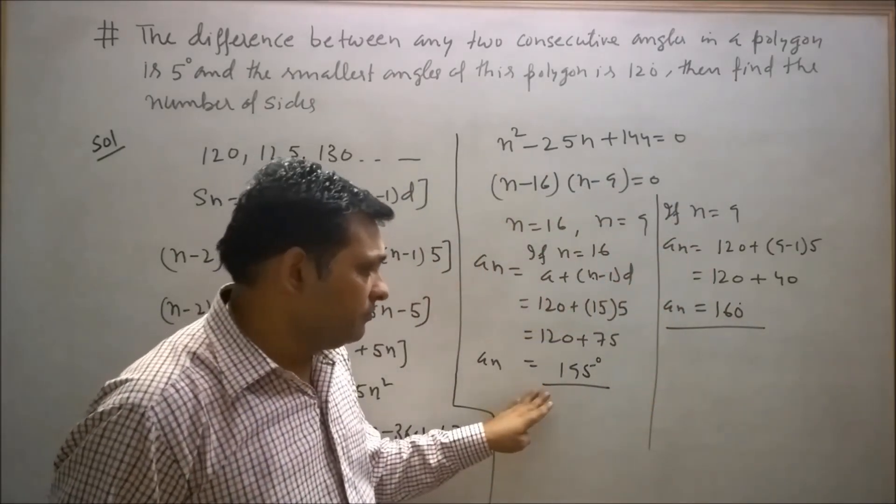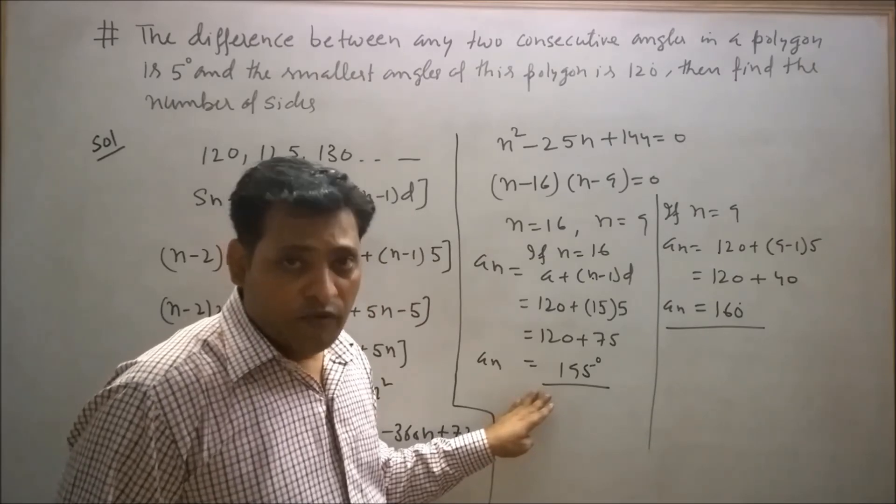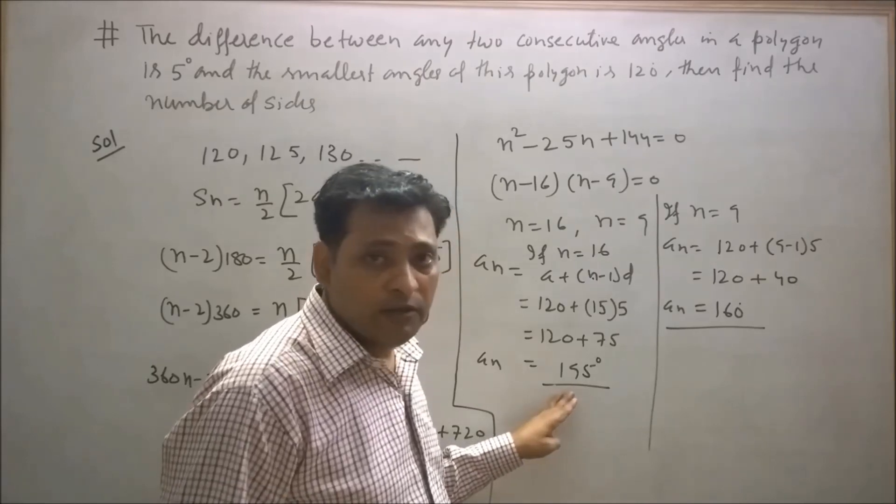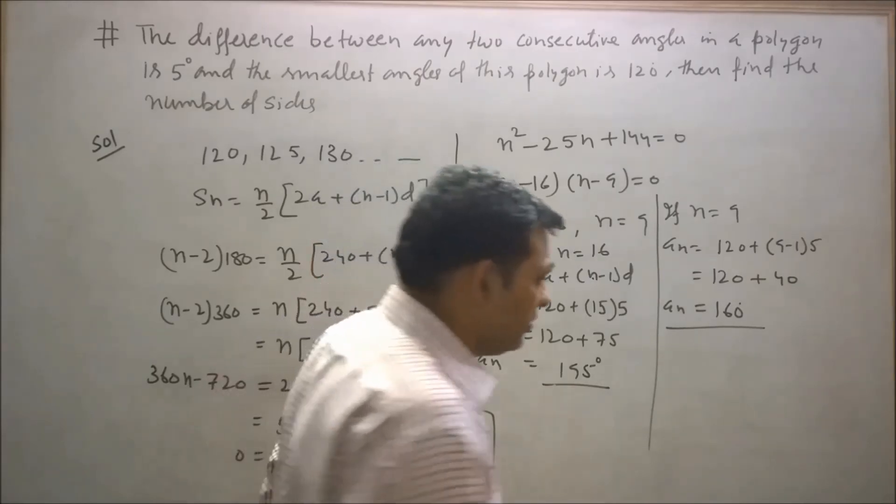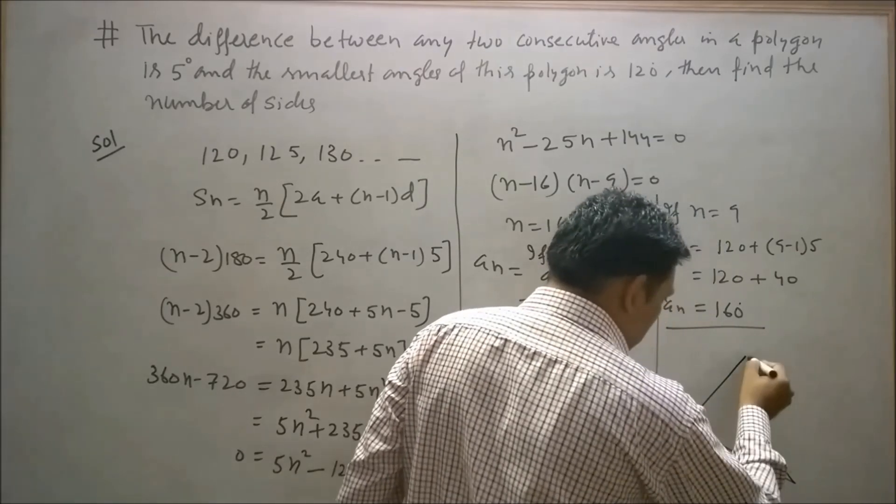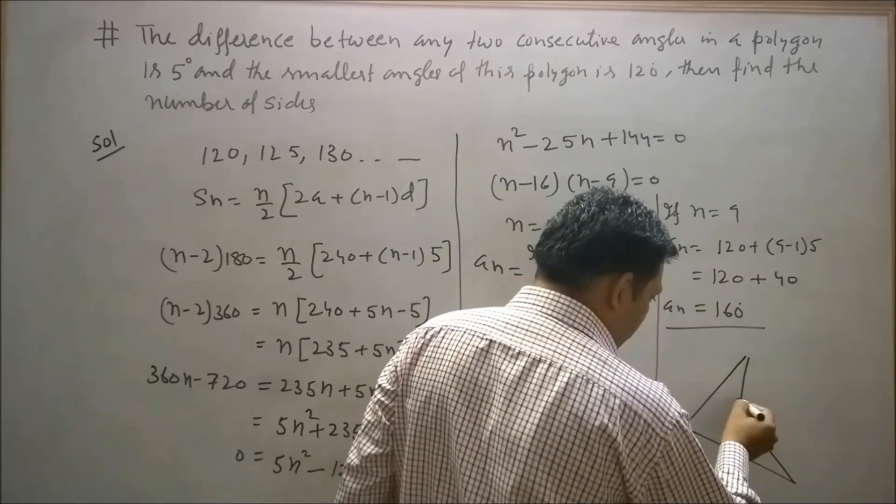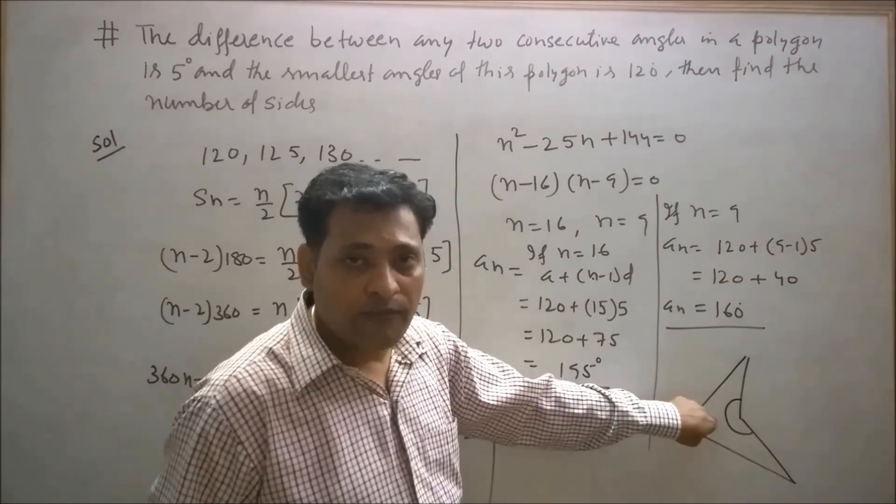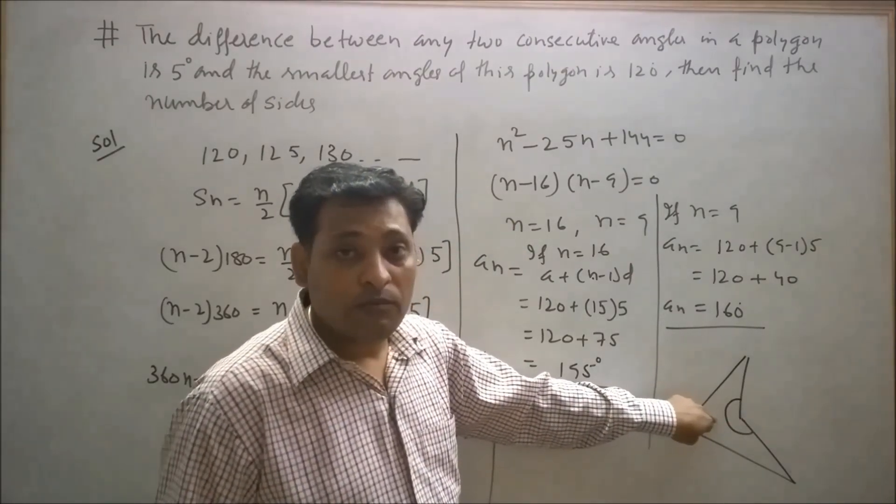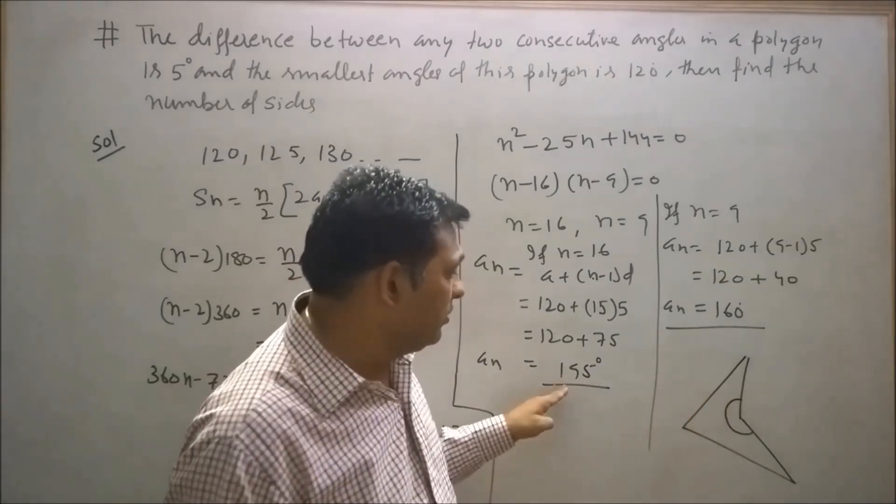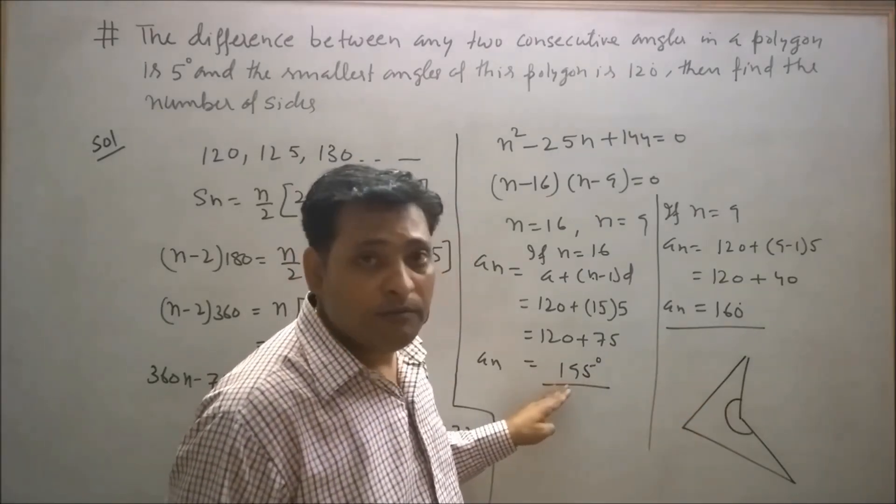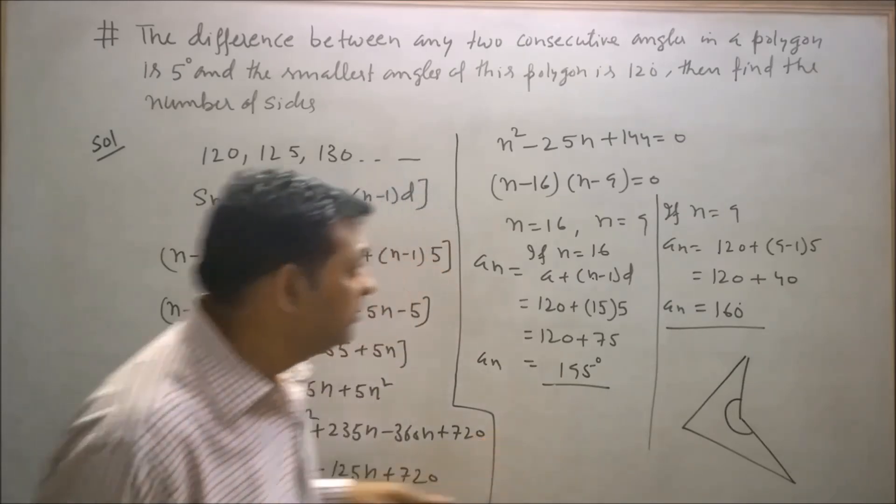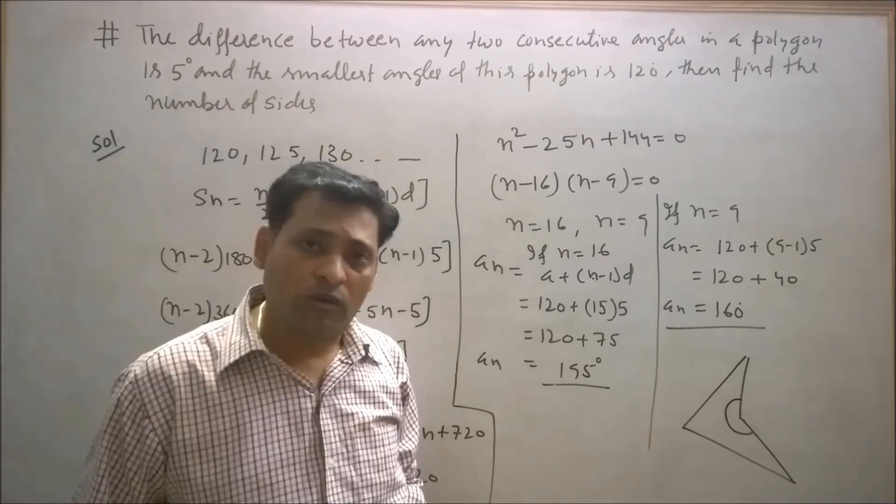Some students may say any interior angle cannot be more than 180 degrees in a polygon. But in some situations it is possible that the interior angle will be more than 180 degrees, for example if we use a concave type polygon. This angle is reflexive and reflexive angles are always more than 180 degrees. So how can we say that 195 should be rejected? I will give preference to my first approach since in the question it is not given that the polygon is concave type.